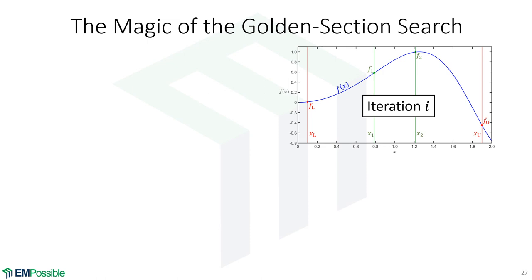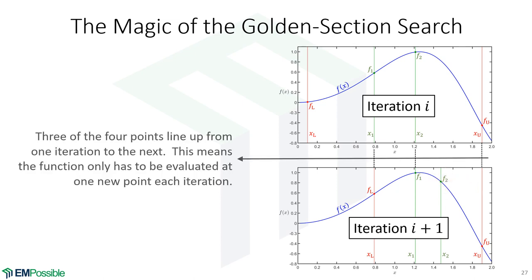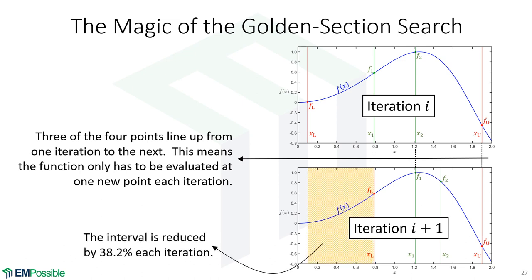Here's a still version: at some iteration i, the maximum is to the right, so we adjust our points to the right. Vertical dashed lines show how points from the previous iteration fall on points of the next iteration — three of the four are just copies, so we only evaluate the function at one new point per iteration. Even more impressively, every iteration we eliminate almost 40 percent of the span between the upper and lower bounds. That's what the golden ratio achieves, making this a very fast and efficient optimization algorithm.